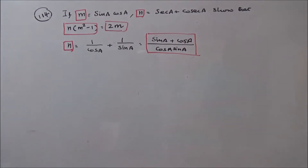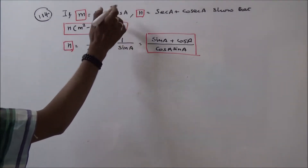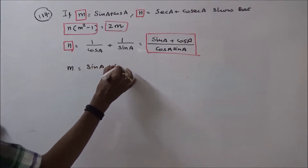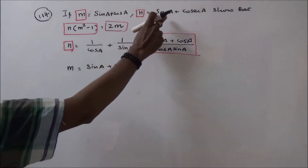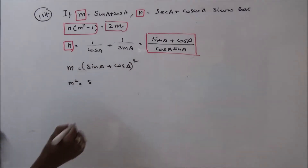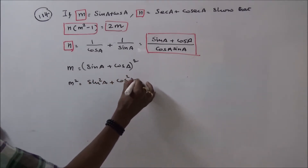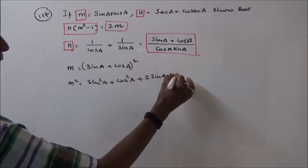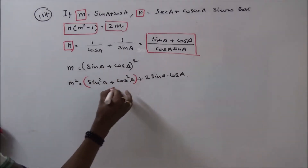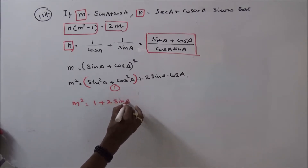Next, m square. Here m is equal to sin a plus cos a, so m square is equal to sin a plus cos a whole square. Using the identity (a + b)² = a² + b² + 2ab, this gives sin square a plus cos square a plus 2 sin a into cos a. We know that sin square a plus cos square a is equal to 1, therefore m square is equal to 1 plus 2 into sin a into cos a.